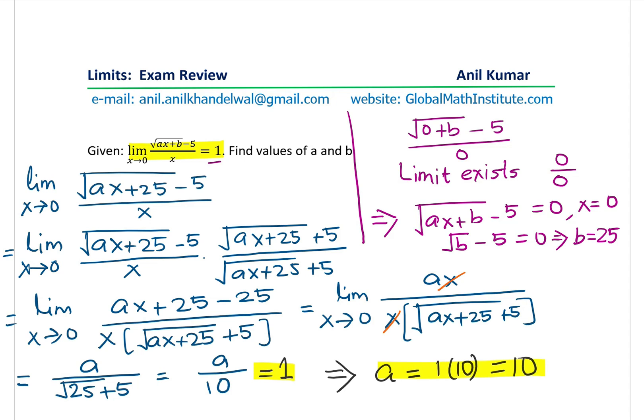So we have both the answers. b is 25 for us and a is 10 for us. So we can write down our answer, which is a equals to 10 and b equals to 25.